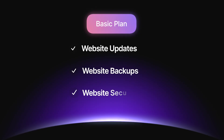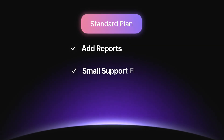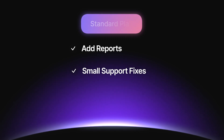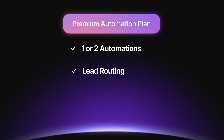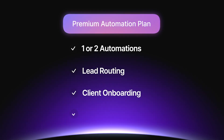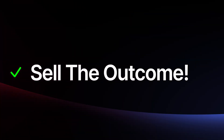So how do you sell it? Keep it simple with tiered plans. Your basic plan covers updates, backups, and security. Your standard plan adds reports and small support fixes. Then there's the premium automation plan, which includes one or two automations like lead routing or client onboarding, plus a quarterly optimization check. But don't sell the task — sell the outcome. If your automation saves five hours a week or recovers abandoned sales, that's worth hundreds of dollars to every business every month. Price it confidently.